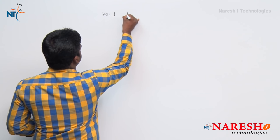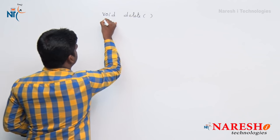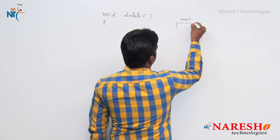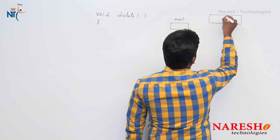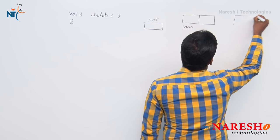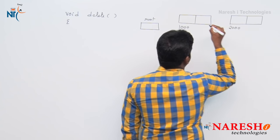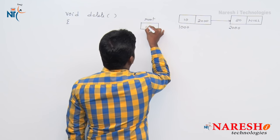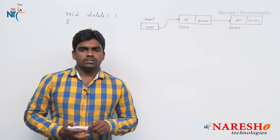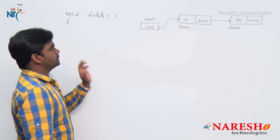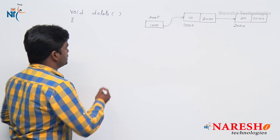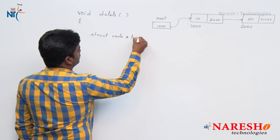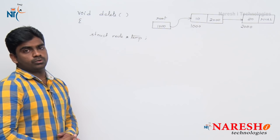The function name we are writing is 'delete'. In the delete function we are also taking the list. Suppose the root variable initially has only two nodes because in the first case I want to delete the first node. To perform the temporary operations we are declaring a pointer variable 'temp'. Root is a global variable — no need to disturb the root variable.